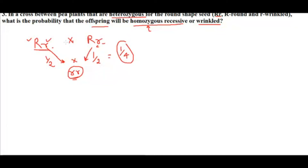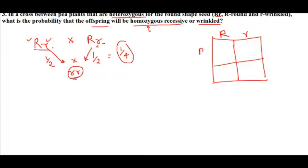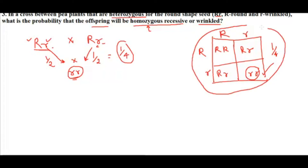We can verify this using a Punnett square. Parent one is Rr and parent two is also Rr. The possible combinations are RR, Rr, Rr, and rr. Out of these four possibilities, there is only one chance of getting rr — homozygous recessive — giving a probability of one by four. This is the same answer we calculated using the multiplication rule.